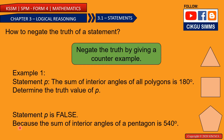This is the counter-example: the sum of interior angles of a pentagon is 540 degrees. This angle plus this plus this plus this plus this is 540. This is called a counter-example. You can give another counter-example — for example, the sum of interior angles of a square is 360 degrees, which is not 180.